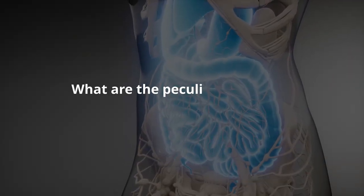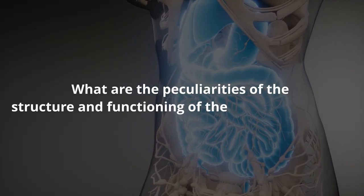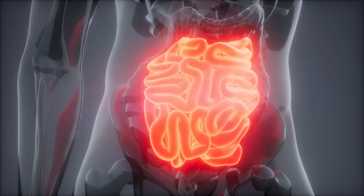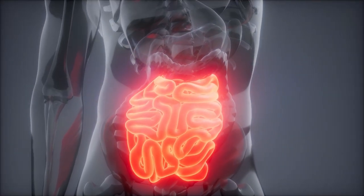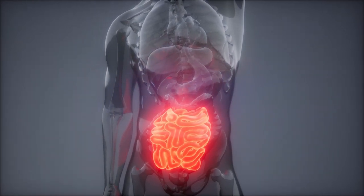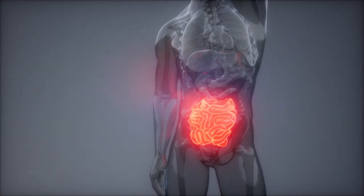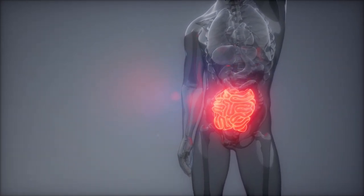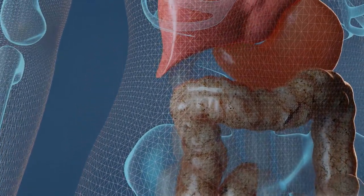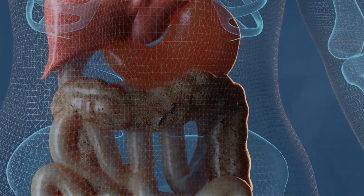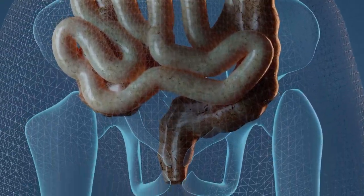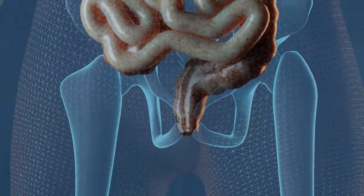What are the peculiarities of the structure and functioning of the human intestine? The human intestine consists of two parts: the small intestine, which is subdivided into the duodenum, jejunum, and ileum; and the large intestine, which is divided into the cecum, colon, and rectum. The length of the entire intestine of an adult is 5 to 7 meters.